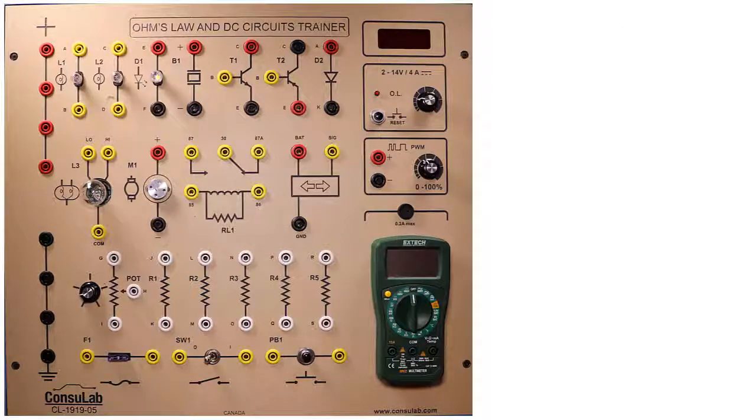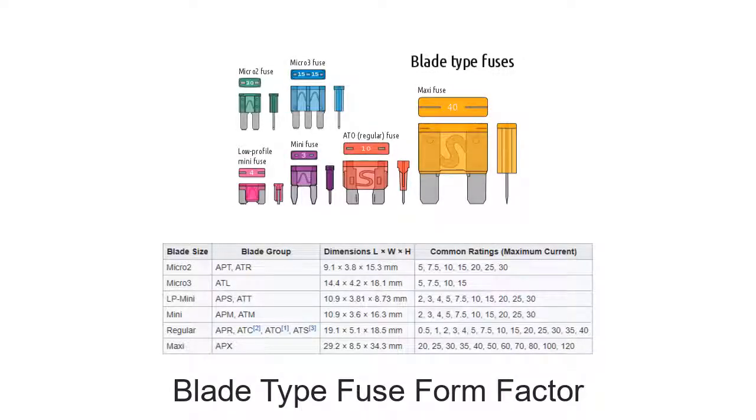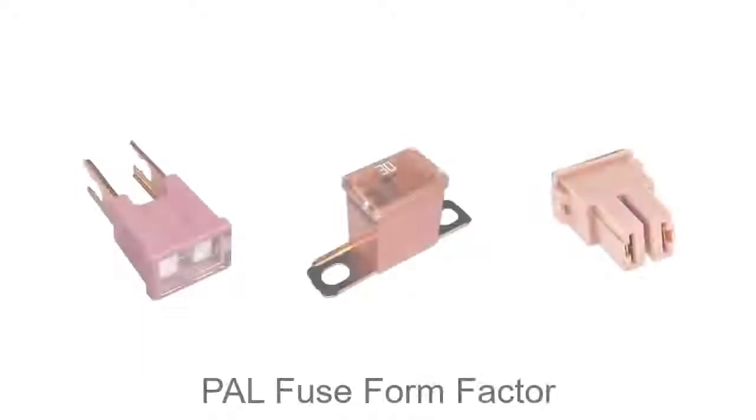Each circuit should have a circuit protection device to open the circuit when an unsafe amount of current is flowing through the circuit. This trainer board is equipped with a blade fuse which is popular in the automotive industry. This chart shows the various sizes and current capacities of the blade fuse form factor. Another popular fuse type is the PAL form factor. As shown, the PAL fuse is available in various types.